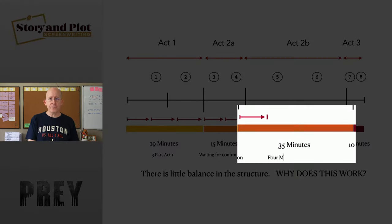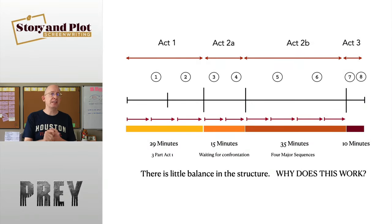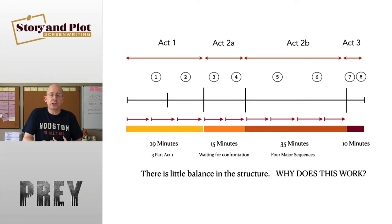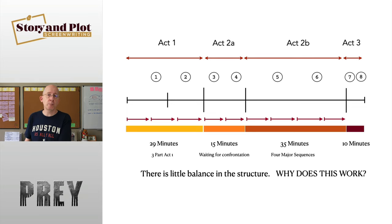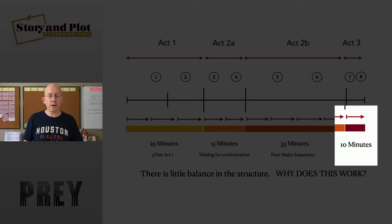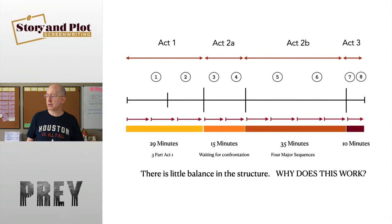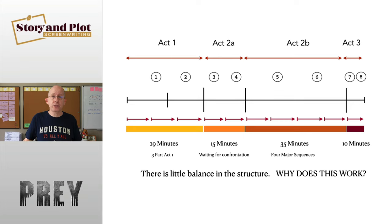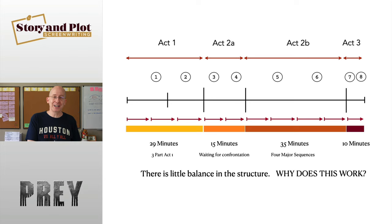Act Two B has four very distinct sequences, each pushing the story forward: she warns her tribesmen and they don't believe her, they're all killed; the French camp with the emotional toll of being poked at and her brother being tortured; the French try to take on the Predator and lose; and going back to the French camp. Then Act Three is the fastest-moving sequence of all — just 10 minutes. You can see roughly 10 primary sequences through this movie, one after another, each driving narrative momentum forward.